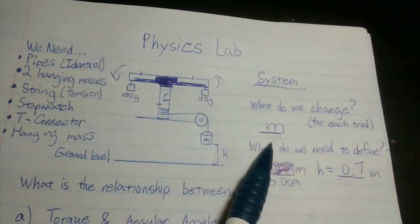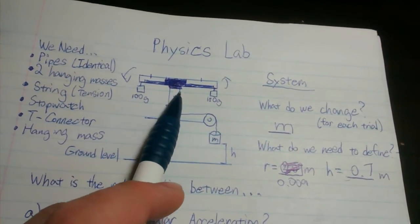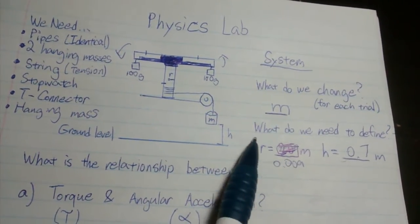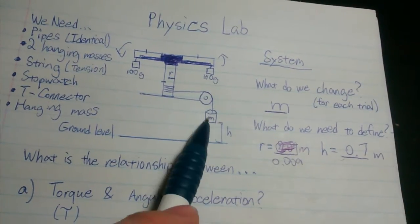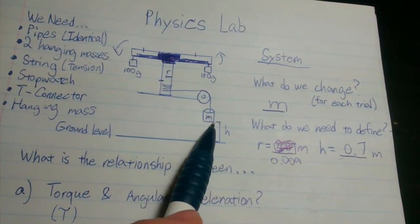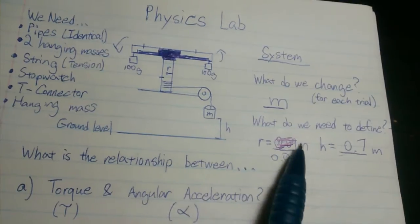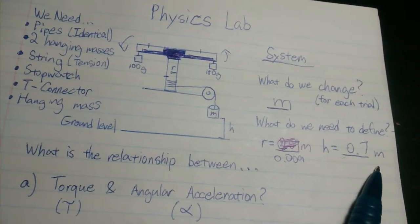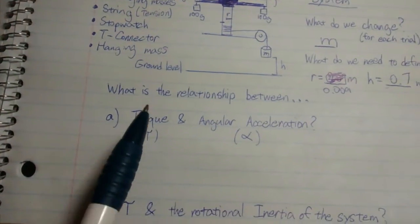First, we need to measure the radius of the middle pipe, which is 0.009 meters. We also need to measure the height from the bottom of the hanging mass to ground level, which we decided was 0.7 meters.